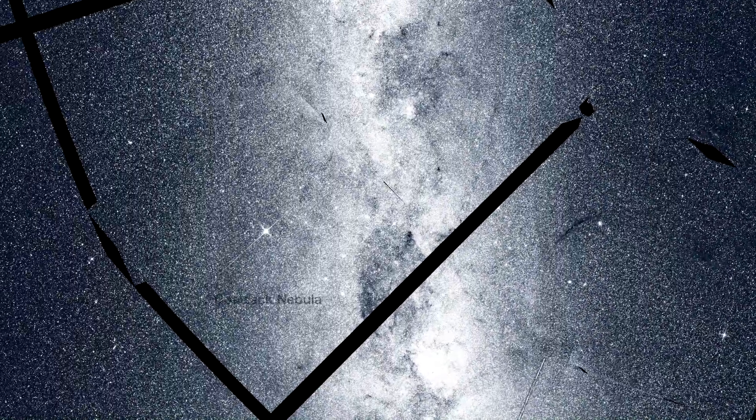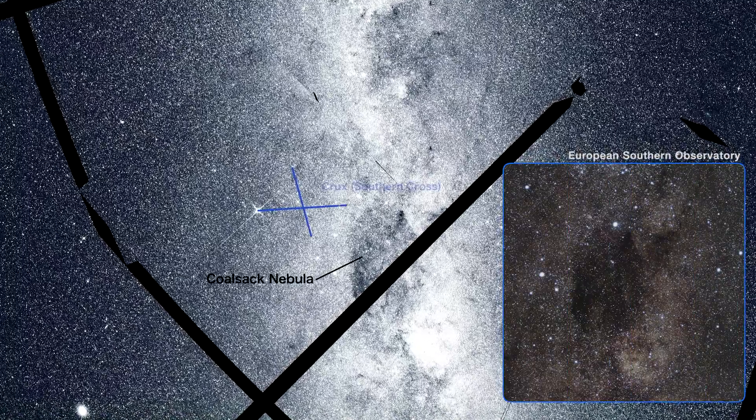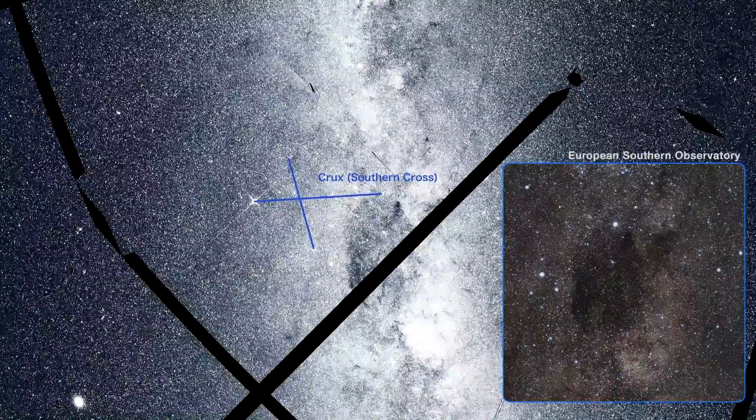Silhouetted by the band of the Milky Way is the Coalsack Nebula, an obscuring cloud of dust in the constellation Crux, also known as the Southern Cross.